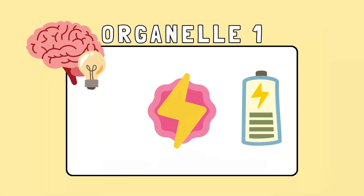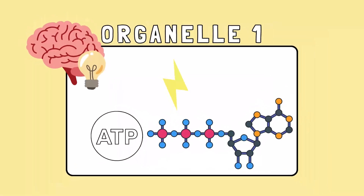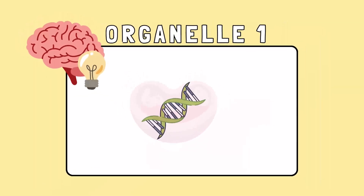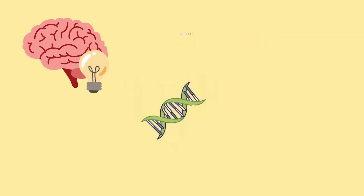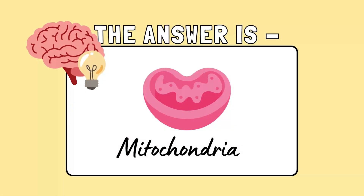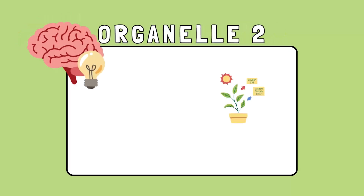This structure is known as the powerhouse of the cell — it generates energy in the form of ATP. It also contains its own DNA and can reproduce independently. If you guessed mitochondria, you are correct! This organelle powers up the cell and keeps all processes running smoothly.